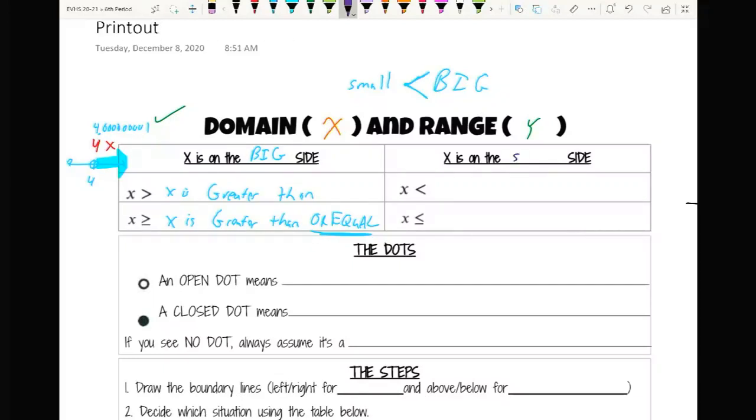Now on the same token, when x is on the small side, we've got x is less than and x is less than or equal to it. Now you probably noticed when you're doing that Desmos activity or when you look down at the bottom, we've got open dots and closed dots. Same idea as with these style of graphs. An open dot means that the point does not count.